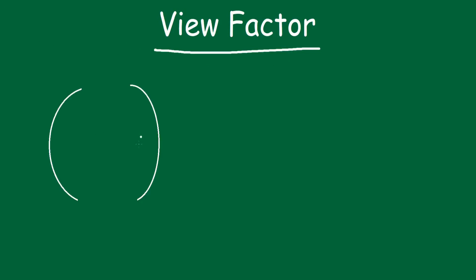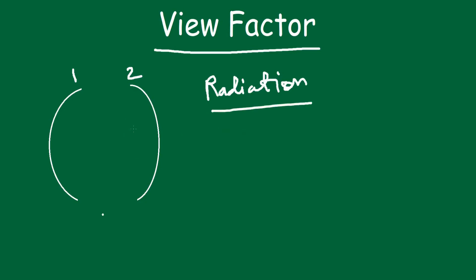In this short video we are going to discuss about view factor. To explain this, I will draw two diagrams. Consider that heat transfer is taking place between two surfaces — let this be surface 1 and surface 2. Heat transfer is taking place due to radiation, and the surface area plays a huge role in determining this radiation heat transfer. To mathematically quantify this, we need the view factor.